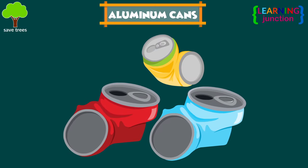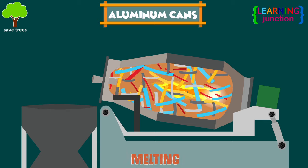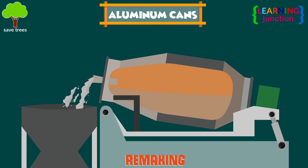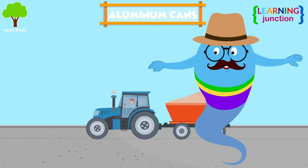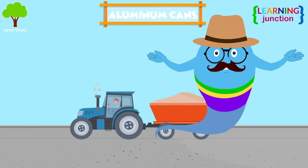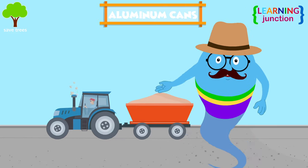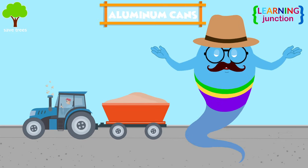Aluminum cans. The used aluminum cans are first shredded and then melted. Then it can be used to make new cans and other aluminum items. Look at the tractor — this tractor's trailer is made up of recycled aluminum. Recycling aluminum does not reduce the quality, so it can be recycled indefinitely.